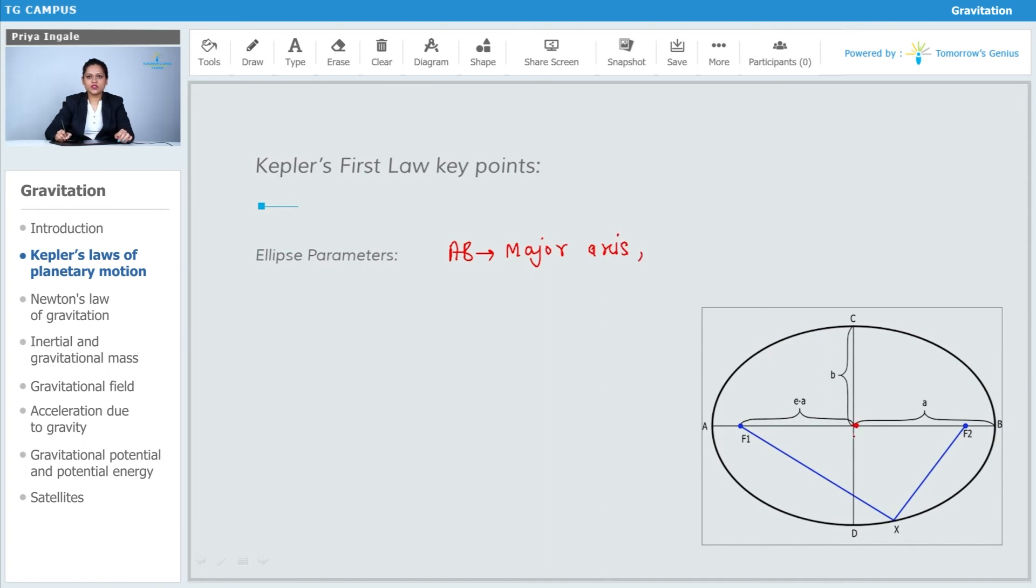If this is the center O, then AO equals OB, called the semi-major axis. According to the given diagram, the value is given as 'a'. Similarly, CD is the minor axis, which is smaller in length. Then CO equal to OD is known as the semi-minor axis, with value 'b' according to the diagram.